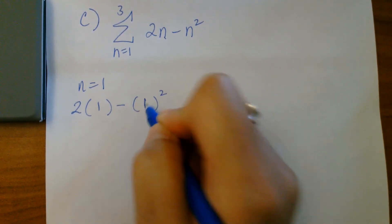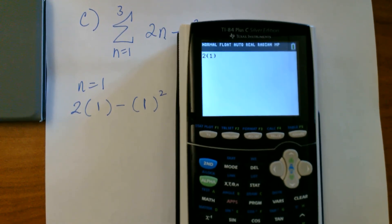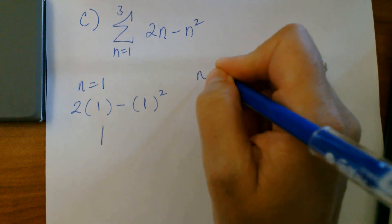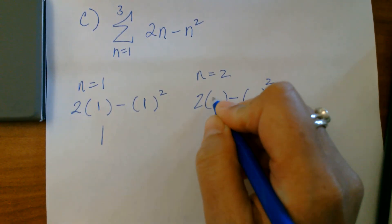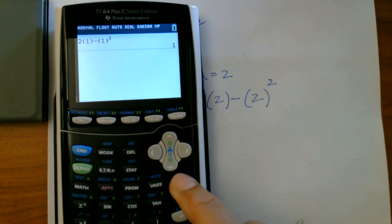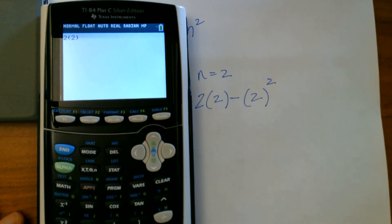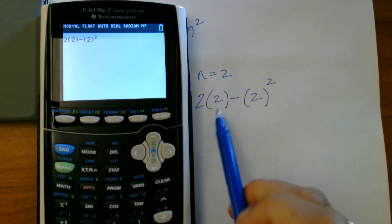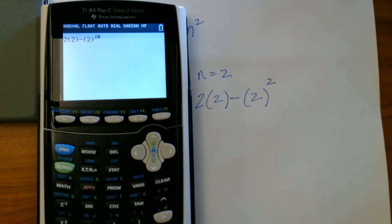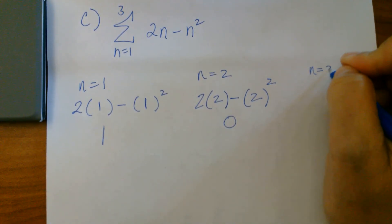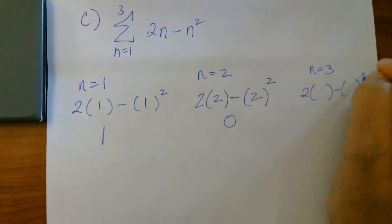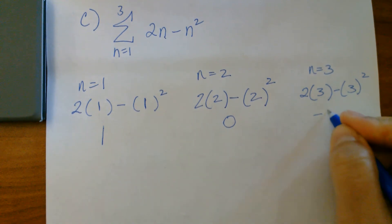So let's substitute the one in. In our calculator, we are going to put it in just like we see it — and this will help down the road if we have negatives. Enter, and we're going to get positive one. n equals two: I'm going to set it up again — two, there's an n, parentheses, minus, there's an n, parentheses, squared — I'm going to put the number two inside. Using the calculator: two, parentheses, times two, minus two squared. Enter and I'm going to get zero. That is interesting — pretty neat. n equals three, our last one: two, parentheses, minus, parentheses, squared, and then I insert my three. And I'm going to get negative three.